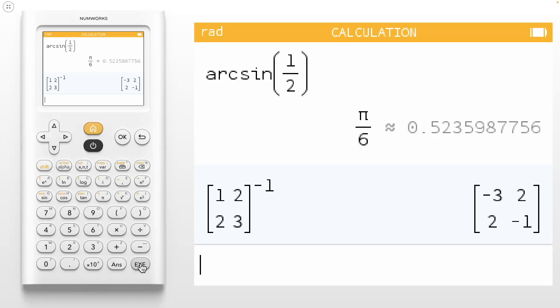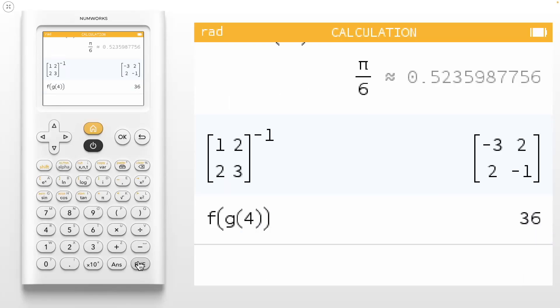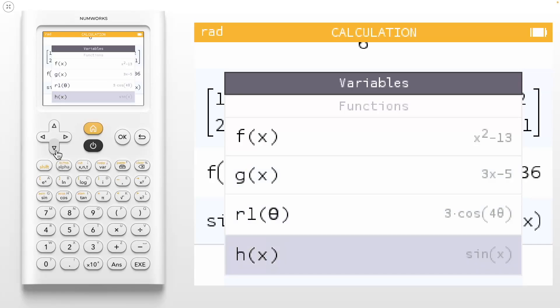Another powerful tool is the var key. This allows you to access stored expressions, functions, and more. For example, since we have the functions f of x and g of x defined in the grapher, you can compute f of g of 4 in the calculation app. You can also create stored functions in the calculation app. For example, sine of x could be stored as h of x. To store, use shift and the x to the y power key. And h is alpha cosine. Now we can find this in our var key as well. You can also delete functions. So let's go ahead and delete h of x.